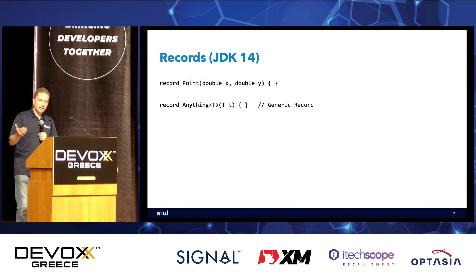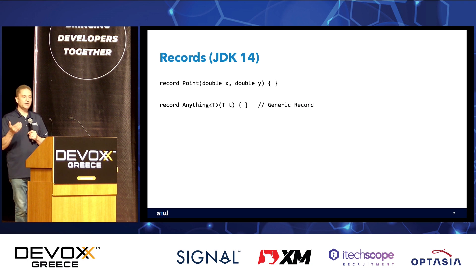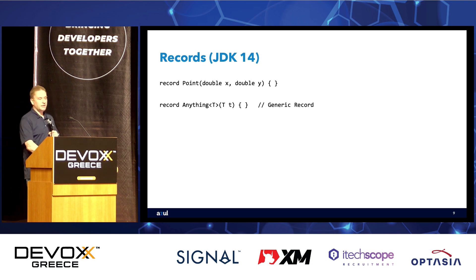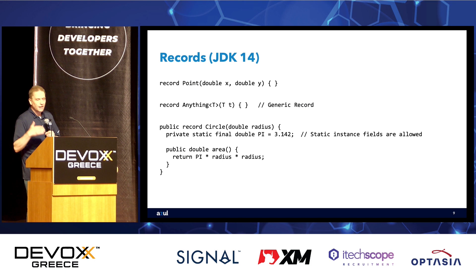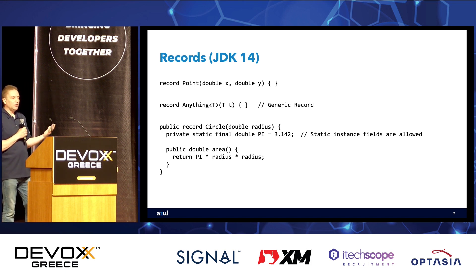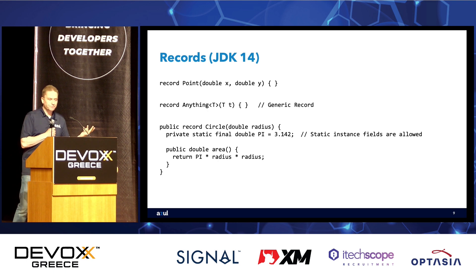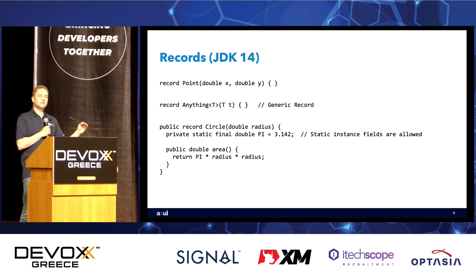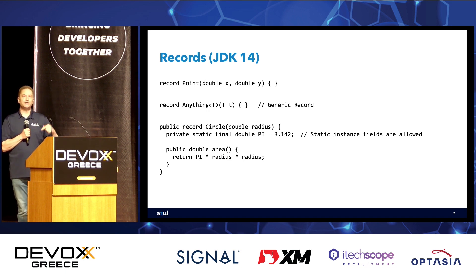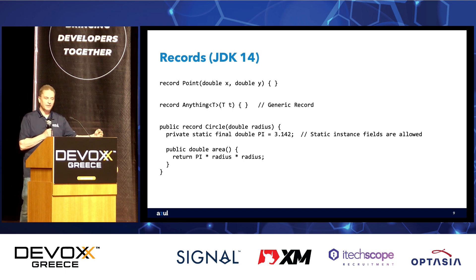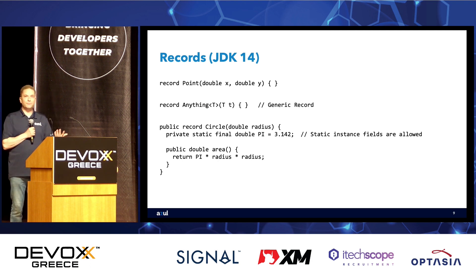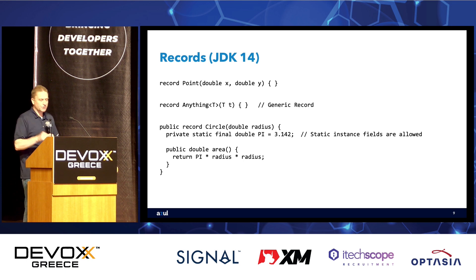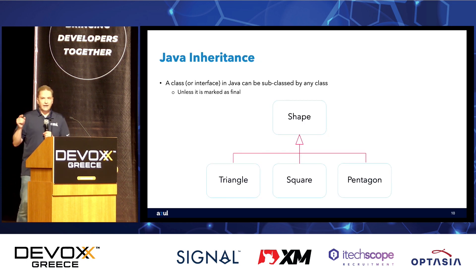Records can also be made generic — we can specify a type parameter and store things of type `T` in our record. We can add more functionality: for example, adding a static instance field and other methods like `area()` which calculates the area of a circle. We can add static fields and methods, but we can't add instance fields that are not defined in the record declaration.